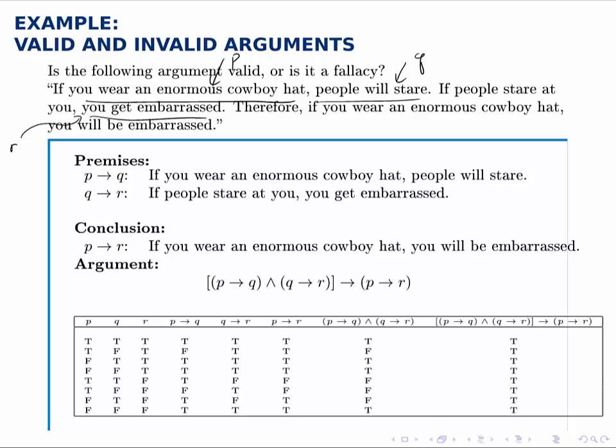And the structure of this argument starts with the premises that if P then Q, and if Q then R. That's those first two sentences. And then therefore leads into the conclusion, and the conclusion is if P then R. So the structure of the argument as a whole looks like P implies Q, and Q implies R, leads to P implying R.